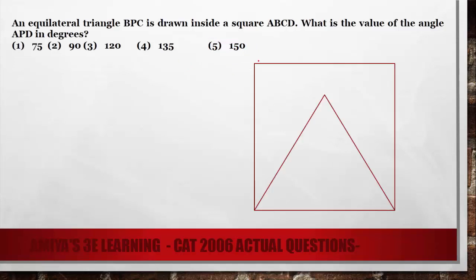I always say first of all, please make a diagram and write down all the values you know. We have A, B, C, D is a square and B, P, C is a triangle. B, P, C is an equilateral triangle inside a square A, B, C, D.